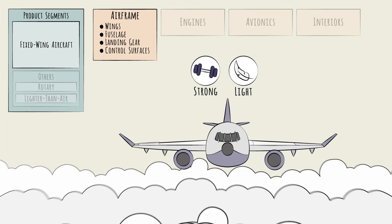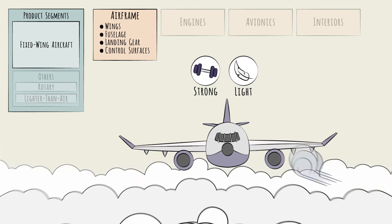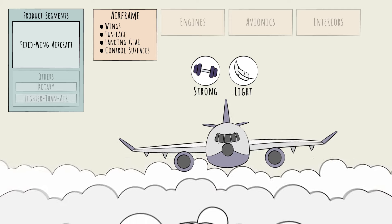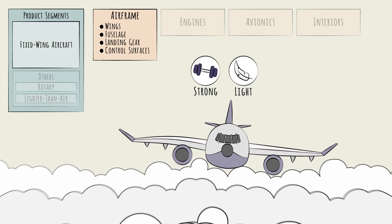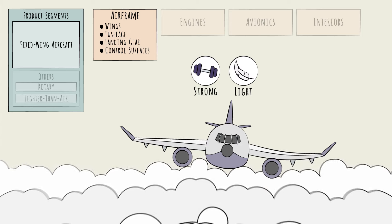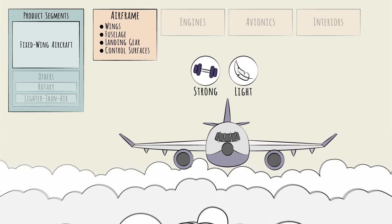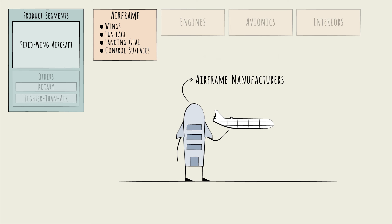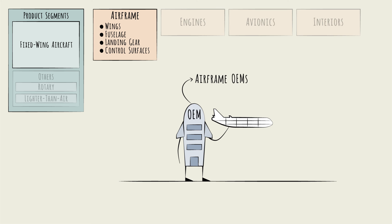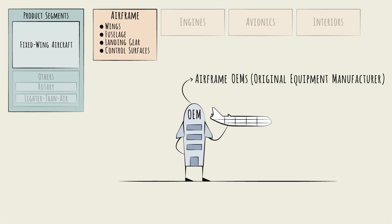This is particularly true for the wings. Wings need to be thin enough to efficiently create lift, and strong enough to support the aircraft — which weighs hundreds of tons — through all flight conditions. The companies that make the airframe are called airframe manufacturers, airframers, or airframe OEMs, standing for original equipment manufacturer.